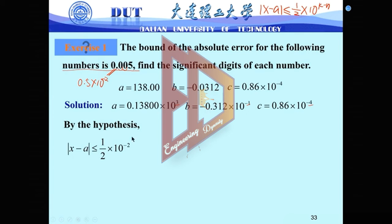Now let's check for A, B, C one by one. For A, we know k is just 3. So by this formula, this power minus 2 should be k minus n. So k equal to 3 for A, then 3 minus n equal to minus 2. Now you know what is n. Then n is just 5.